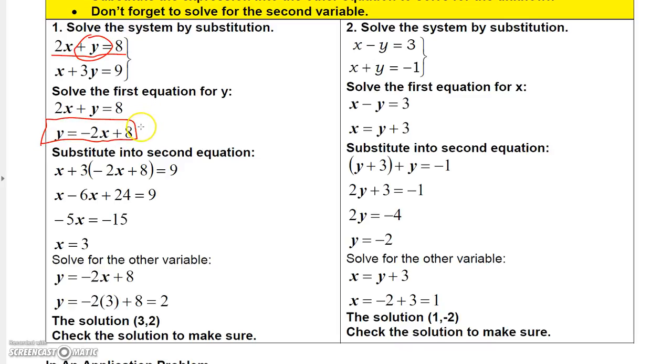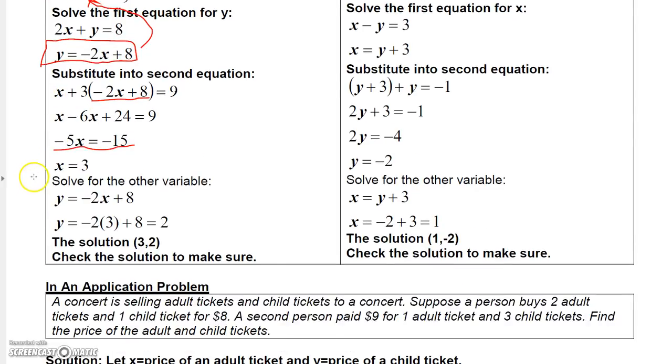Now, then the reason we're going to do that is we want to substitute what y equals back into the other equation. Make sure you don't plug it into the one you got it from because that will just give you a statement that's always true. So we're going to plug it back into this equation here, and let's see what we get. If we plug minus 2x plus 8 for y into the second equation and simplify this, we get x minus 6x plus 24 equals 9. And then x minus 6x is minus 5x. And then if I move the 24 over here, 9 minus 24 is negative 15. And then so I solve this equation, negative 5x equals negative 15, and I get x equals 3.